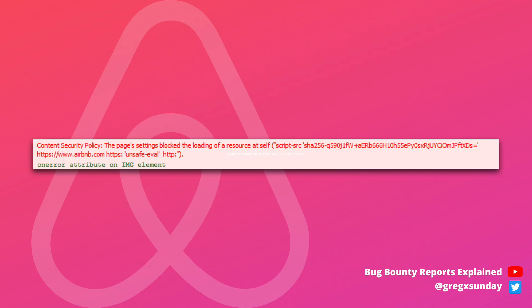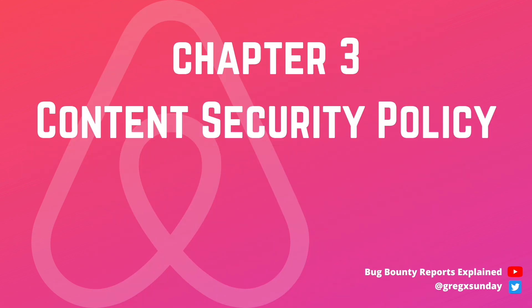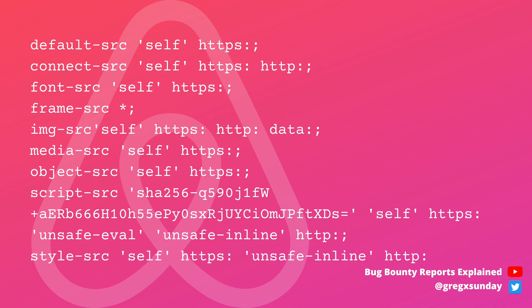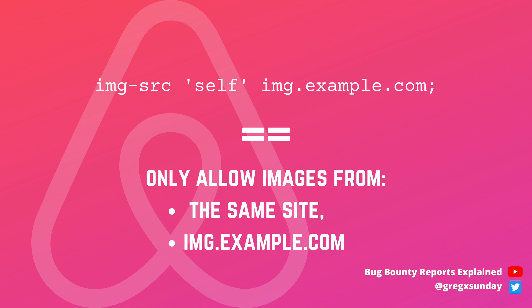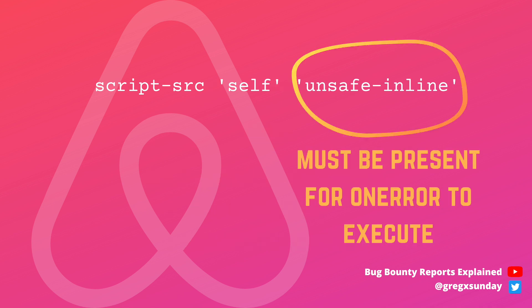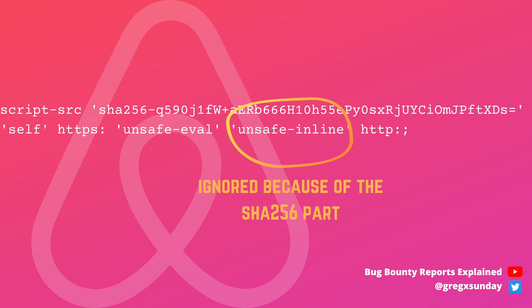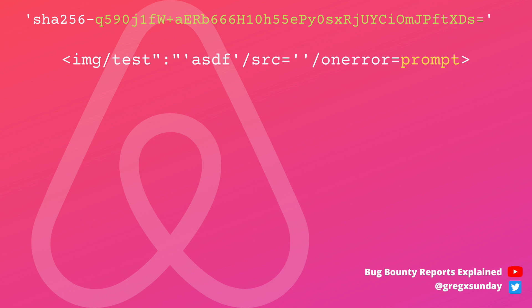So finally we have a way to smuggle arbitrary attributes and we can send a classic image payload — but it didn't work as there was also a Content Security Policy. What is CSP? CSP limits what resources you can use on the website. It's an additional layer of security that helps mitigate cross-site scripting vulnerabilities. You can define domains that you trust and only want to execute scripts from. You can also tell the browser not to trust any inline scripts. On Airbnb, the CSP part that's interesting to us included a SHA-256 value that tells the browser it can only execute scripts whose checksum equals that value.